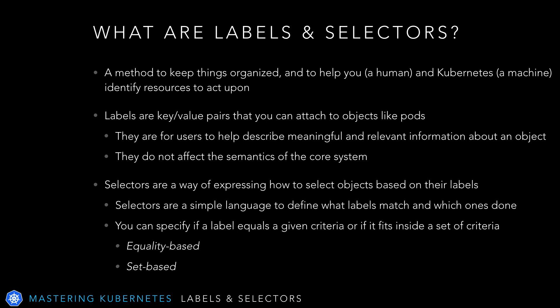Labels are key-value pairs that let you set human-readable attributes on nearly any resource. Selectors are the criteria you can use to match labels. Using labels and selectors together, you can begin to describe to Kubernetes how your system is configured. Kubernetes also provides a few labels out of the box for common concepts — things like hostname, operating system type, architecture, and the like are defined on nodes. A complete list of predefined labels is available in the Kubernetes documentation.